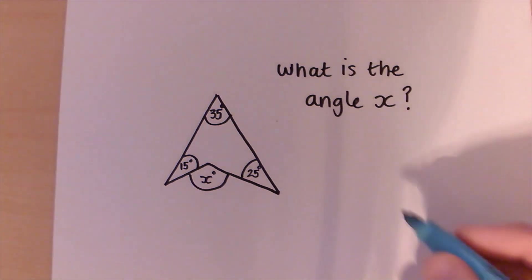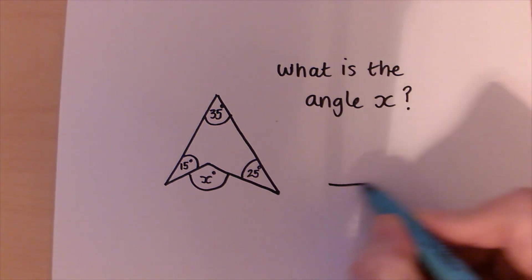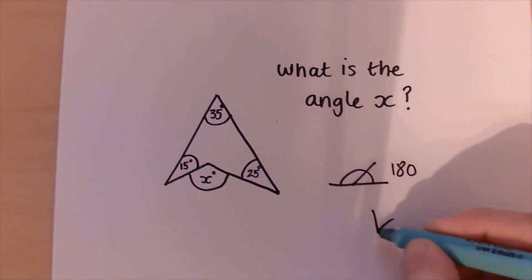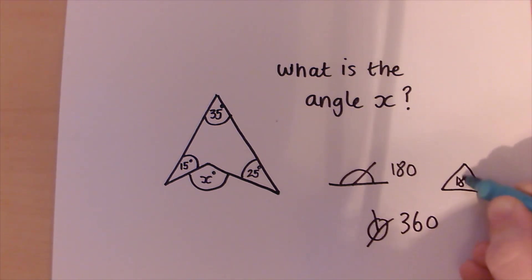OK, so a quick lesson in angles. Angles that meet on a straight line add up to 180. We've got angles around a point add up to 360. Angles inside a triangle add up to 180. And angles in a four sided shape add up to 360 degrees.